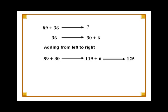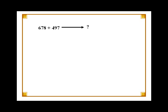Let us try another example. We will add 3-digit numbers 678 and 497. We will split 497 into hundreds, tens, and units. 497 can be written as 400 plus 90 plus 7.